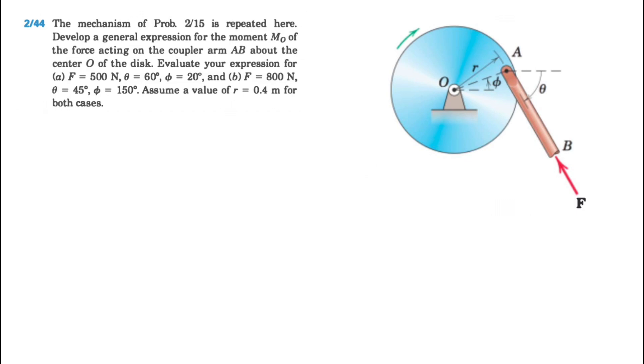So in here we need to develop a general expression for the moment of the force acting on the coupler arm AB about the center O, and we need to evaluate the expression based on the two conditions that we have in this question. We have different values for F, theta, phi, and we know the value of r is 0.4 meters.